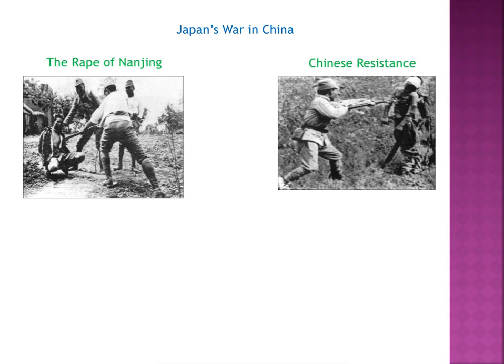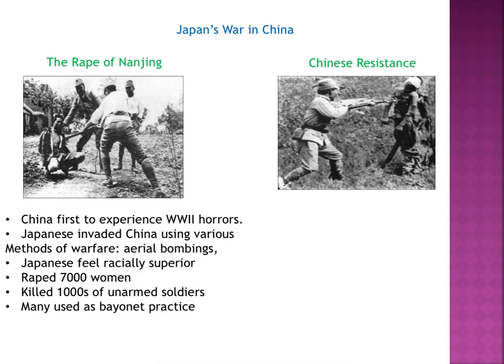Starting off with the origins of World War II — Japan's war in China. China was the first to experience World War II horrors. The Japanese invaded China using various methods of warfare, such as aerial bombings, regular bombings, and fire lances. The Japanese felt racially superior to the Chinese and were on an imperialistic movement to gain total control of the Asian and Pacific area. The Rape of Nanjing was when they went into China — they raped about 7,000 Chinese women and killed thousands of unarmed soldiers, whose equipment was very limited compared to Japan's.